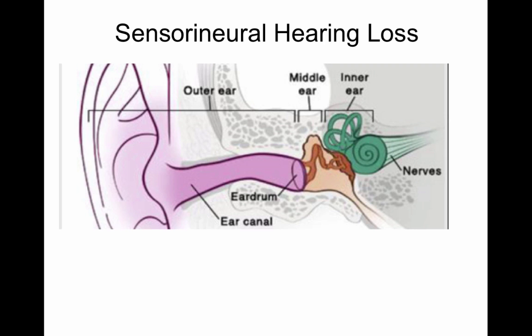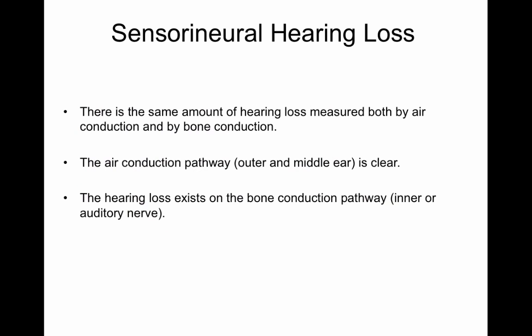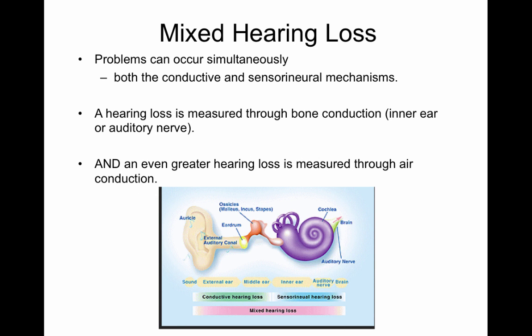So with sensorineural hearing loss, there's a problem in the inner ear. Your air conduction scores are abnormal and your bone conduction scores are abnormal. There is the same amount of abnormality for air conduction and bone conduction scores when you have a sensorineural hearing loss. Even though the air conduction pathway is clear, there's a hearing loss in the bone conduction pathway — the inner ear or the auditory nerve.